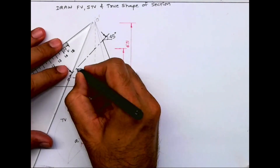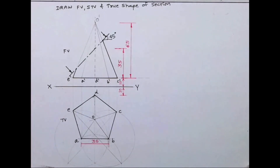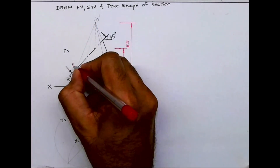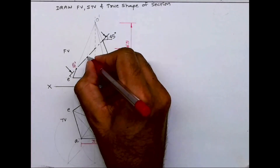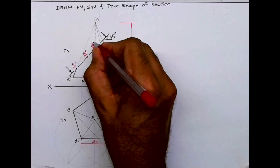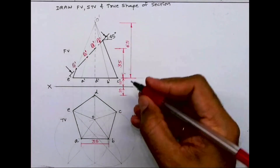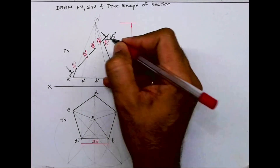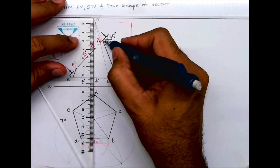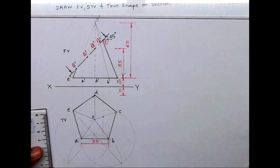Now if you see the cut points: here I will write PE dash, here PA dash, here PD dash, then PB dash and PC dash. We'll get five points. Now I'll project these points down — wherever it cuts on OC, that will be point PC.